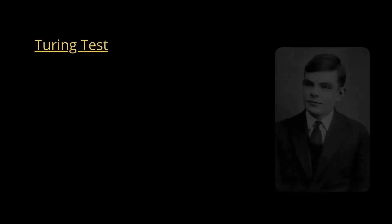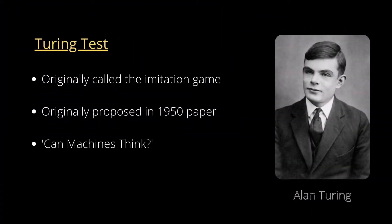The Turing test, originally called the imitation game by computer scientist Alan Turing, is a method of inquiring whether or not a machine is capable of thinking like a human being. Alan Turing originally proposed the Turing test in a 1950 paper in an attempt to answer the question: can machines think?